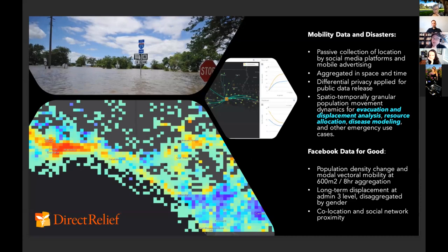This has led towards a lot of data on the United Nations humanitarian data exchange platform, particularly some of the data provided by Facebook. Key use cases include evacuation and displacement analysis, resource allocation — like the N95 masks I mentioned — disease modeling, which has been a really significant effort during COVID-19, and other emergency use cases.